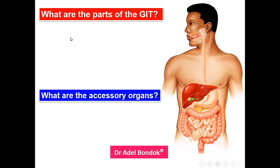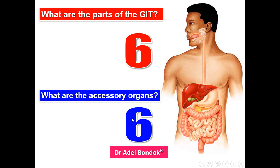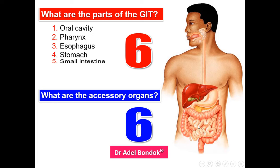What are the parts of the GIT and what are the accessory organs? The gastrointestinal tract has six parts: oral cavity, pharynx, esophagus, stomach, small intestine, and large intestine.